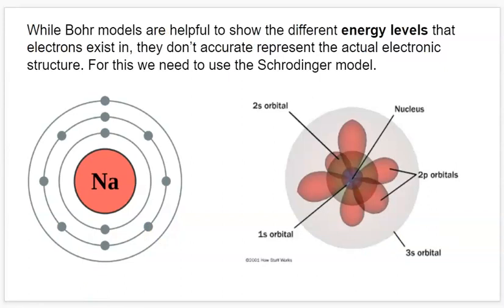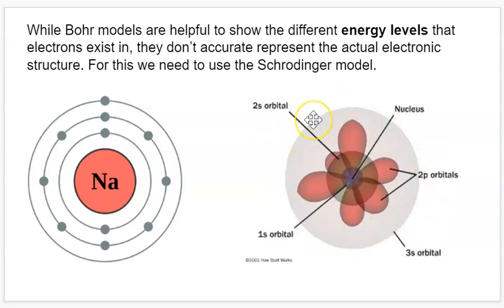Bohr models are really helpful to show the different energy levels that the electrons can exist in, but the reality of things is a lot more complicated. To actually get into why each shell can hold the number of electrons that it can, we need to talk about something called the Schrödinger model. The Schrödinger model is a mathematical interpretation of energy levels of an atom done with fancy physics and calculus. Somebody was able to figure out what all of the actual orbital shapes look like, and it turns out they look like spheres and balloon-shaped things. Despite the weirdness, it models the atom really accurately in ways that we can predict and prove with experiments.